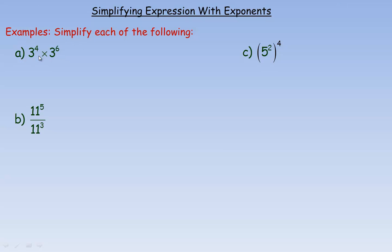The first one, we're given that we have 3 to the fourth multiplied by 3 to the power of 6. The exponent rule that would be applied here is we're multiplying two powers with the same base. The base in the rule is a, just like the base here is 3. To simplify that to one single power, you write it as a power of the same base and add the two exponents. So 3 to the fourth times 3 to the sixth would be 3 to the 4 plus 6, which is 3 to the tenth.